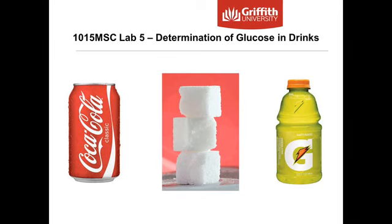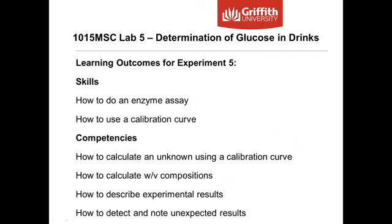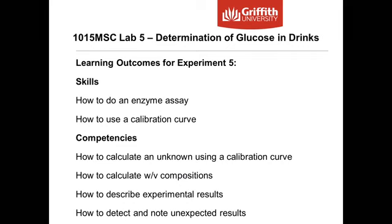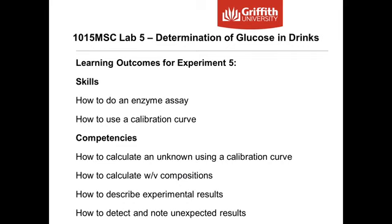In your final lab, you'll be determining the glucose concentration in two popular drinks, which are Coke and Gatorade. This is quite a complex experiment, and you're getting quite a few skills out of it. We're going to be doing an enzyme assay to determine the glucose concentration. From the results of your enzyme assays, you'll be able to plot a calibration curve or standard curve using known glucose concentrations, and then use that curve to determine the glucose concentration in your Coke and Gatorade samples.